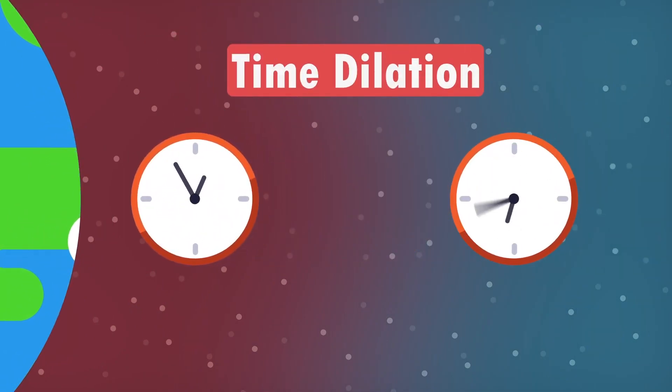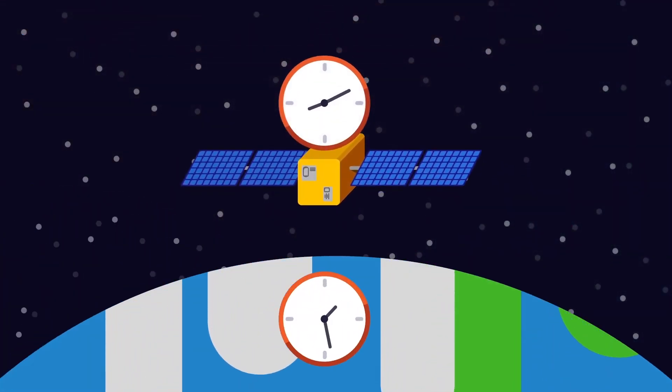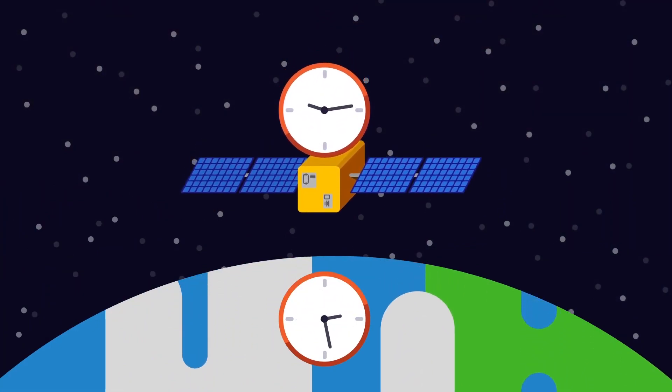This is what time dilation is, and the reason why GPS satellites in space have to slow their clocks down, so that they tick at the same speed as our clocks on Earth.